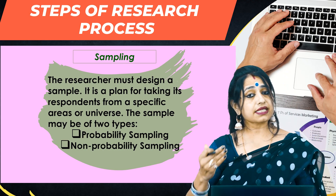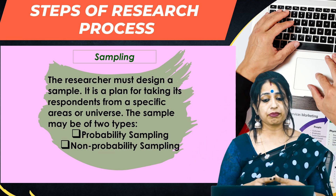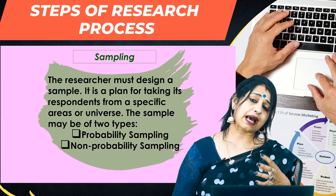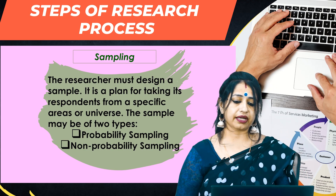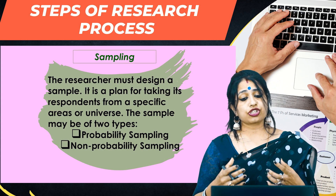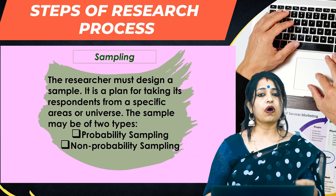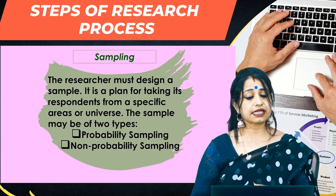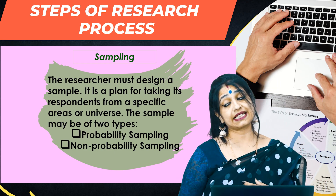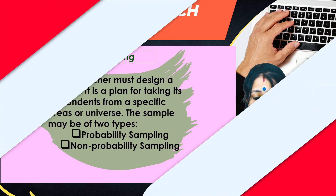The next step is sampling. The researcher must design a sample. Sampling is a plan for selecting respondents from a specific area or universe. The sample may be of two types: probability sampling or non-probability sampling.